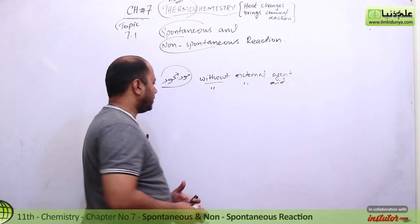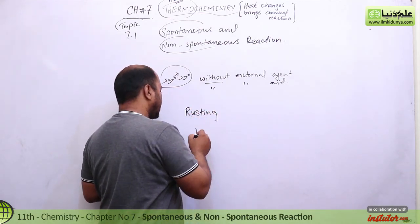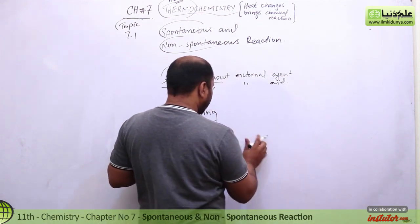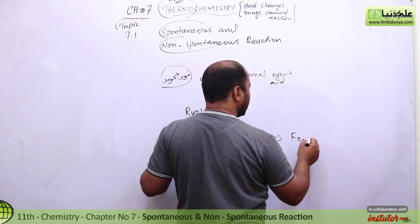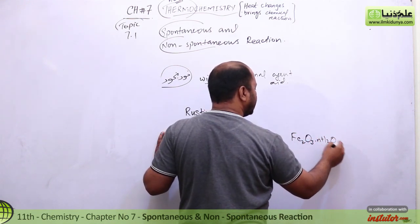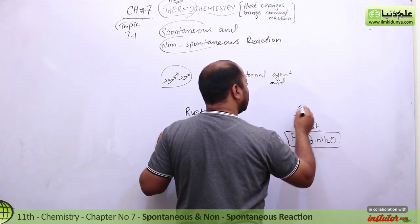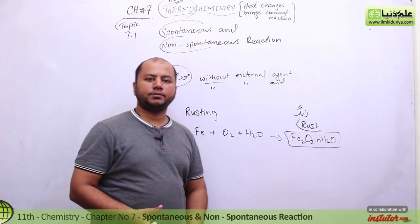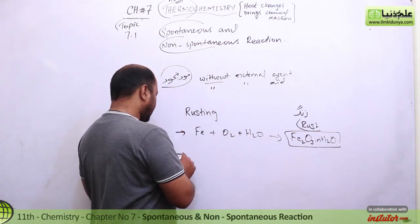For example, rusting: iron plus oxygen with some water molecules goes to Fe₂O₃·nH₂O — that is the formula. Yeh hai spontaneous. Khud ho raha hai, bohut slow hai lekin khud ho raha hai.